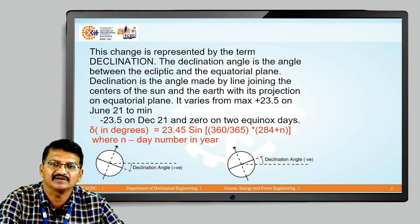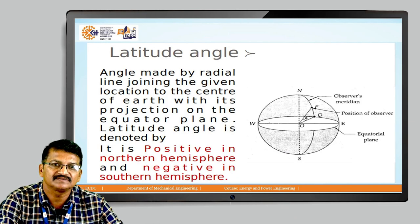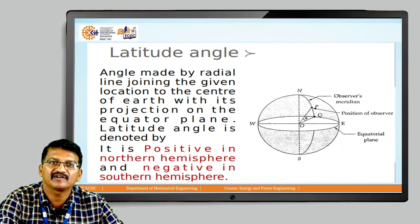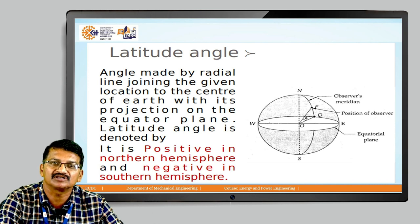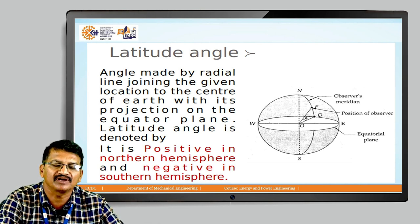Generally, the two equinoxes fall in June and September. The first angle we need to see is the latitude angle — the angle made by the radial line joining a given location to the center of the earth with its projection on the equatorial plane. Latitude is positive in the northern hemisphere and negative in the southern hemisphere. Latitude and longitude angles are used by everyone to specify any location on the earth, and these two angles are very important. The latitude angle is generally measured from the center of the earth toward the north or toward the south.